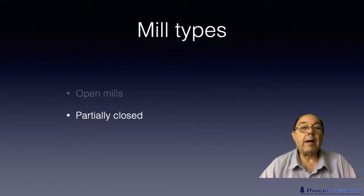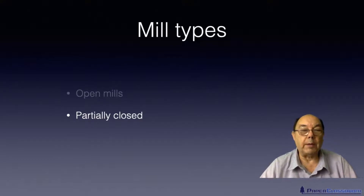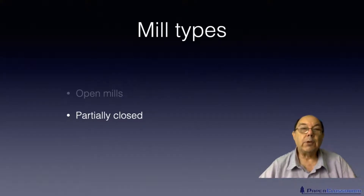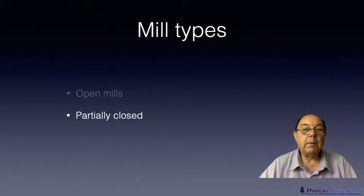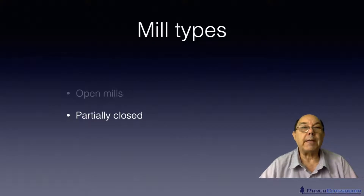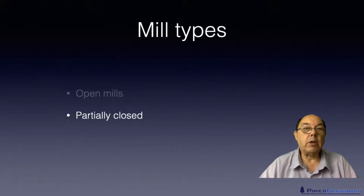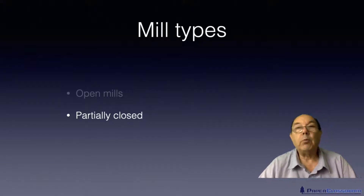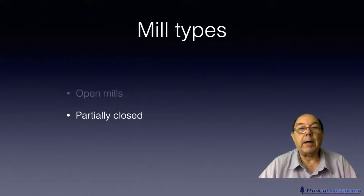Then there are so-called partially closed mills, or partially open mills. These mills will bring in water, it will go through the process, but some of that water will actually be recirculated within the process and only some of it will be discharged.